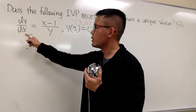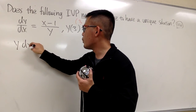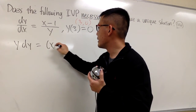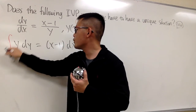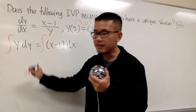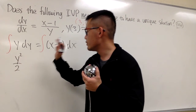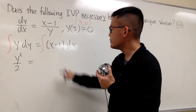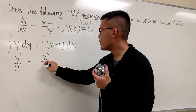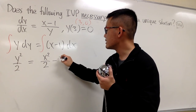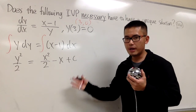Multiply y on both sides, multiply dx on both sides. We will have y dy equals (x minus 1) dx. Then we can integrate both sides. On the left-hand side it is y squared over 2. This is equal to x squared over 2 minus x plus C.